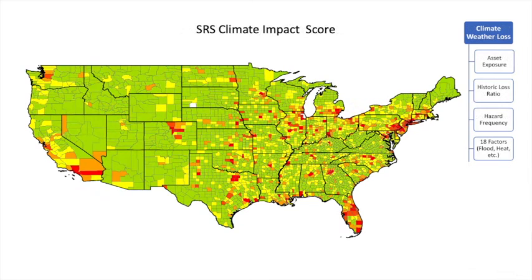The SRS climate impact score looks at asset loss exposure, historic loss ratios, hazard frequency, and 18 other factors such as flood and wildfire.